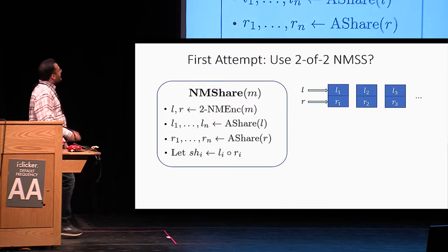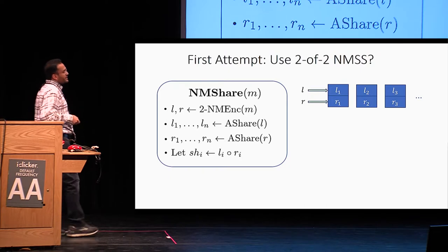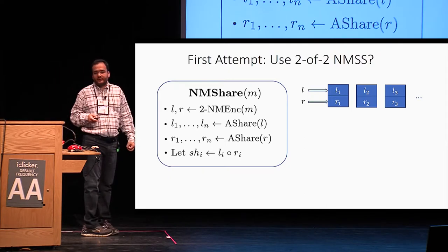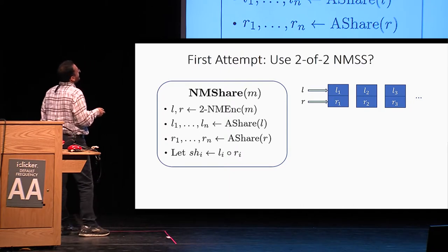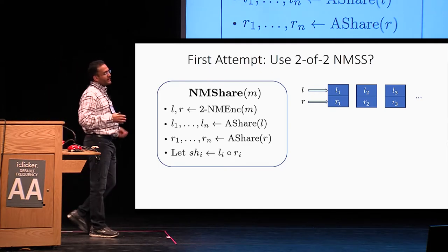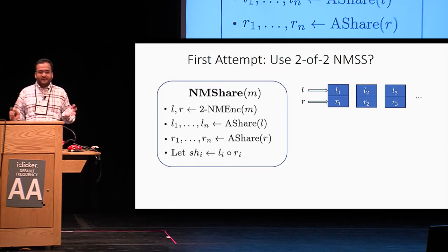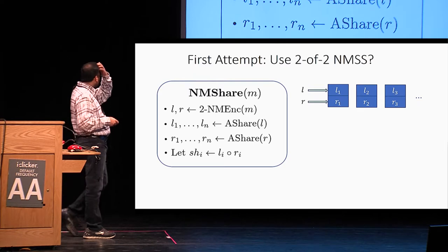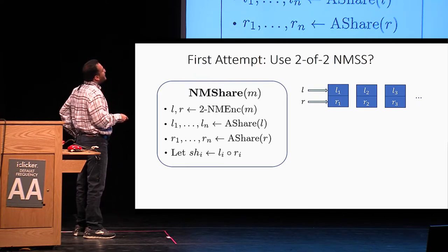Here is the first attempt. You start with the original message and break it into two parts, L and R, using a two-out-of-two non-malleable secret sharing scheme. Then you further share both parts: L is shared into N shares, and so is R, using the scheme A.Share — the underlying secret sharing scheme for access structure A. The share in our scheme is just the concatenation of L_i and R_i.